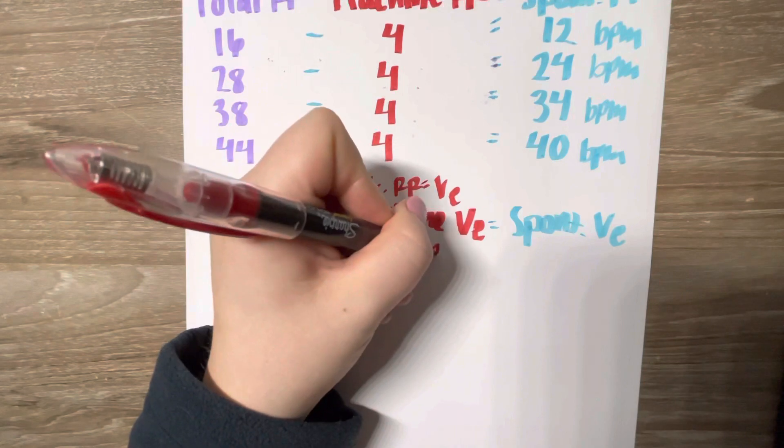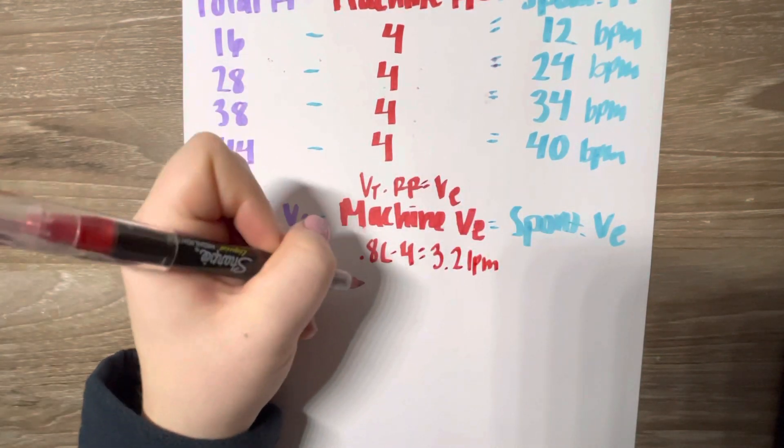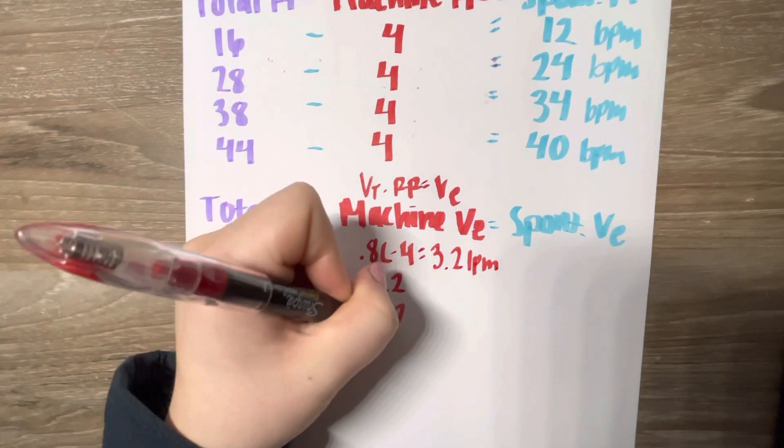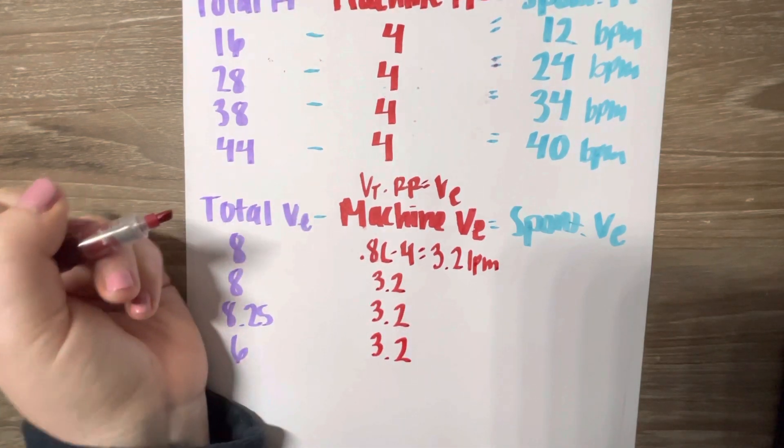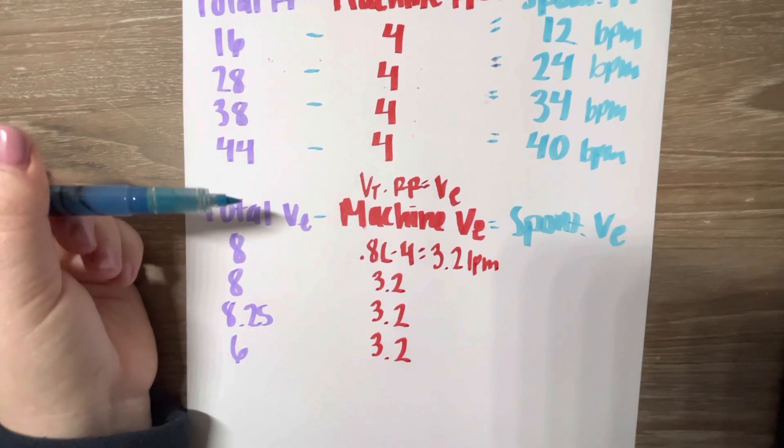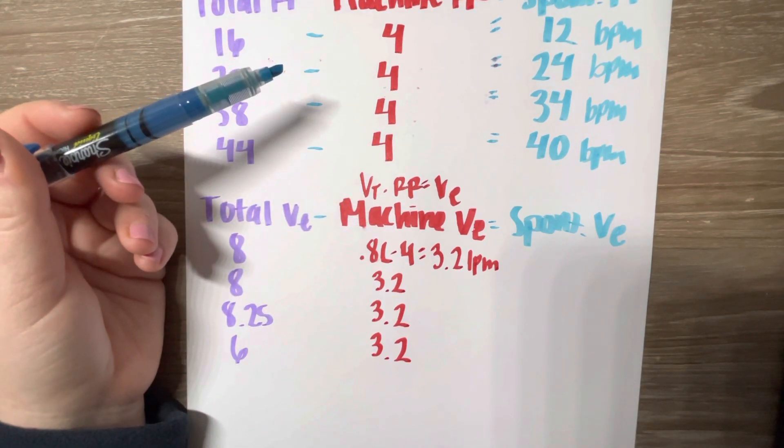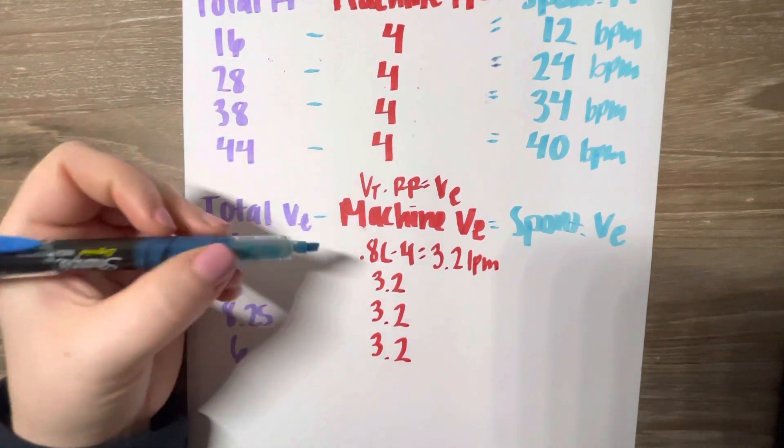And when I did that, I got 3.2 liters per minute. Now that we have our total minute volume and our machine minute volume, it's the same thing as above. We're just subtracting because the only thing that can be left over is the spontaneous minute volume and what the patient is doing.